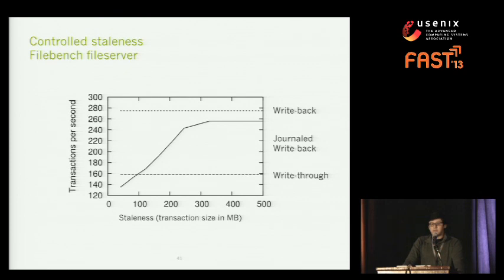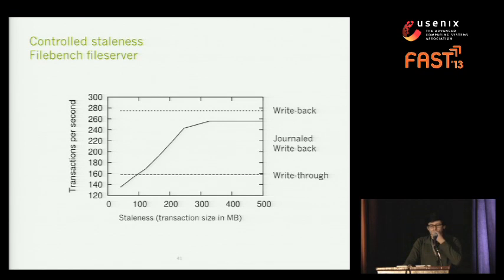We performed a simple experiment to see how we can control performance by controlling staleness. This shows how we can trade off performance for some staleness. We limit the transaction size of the network storage, varying it from one to a large value of 500 MB. We can see that we are able to control throughput from something similar to write-through — when the transaction size is one, we're really performing as write-through — all the way to something similar to write-back.